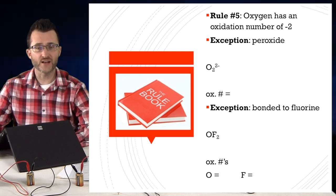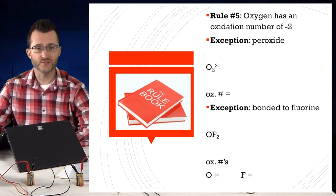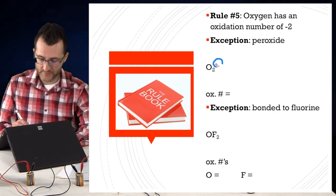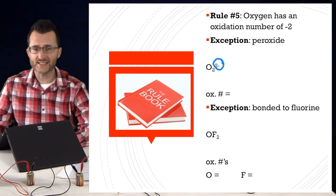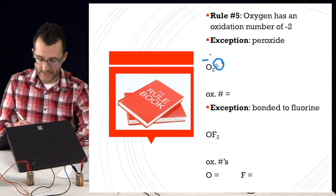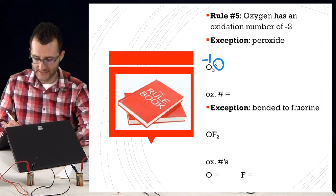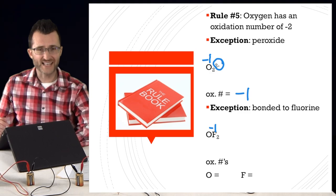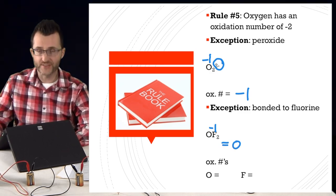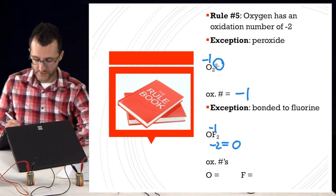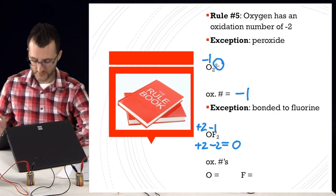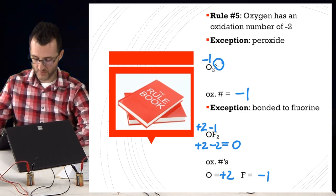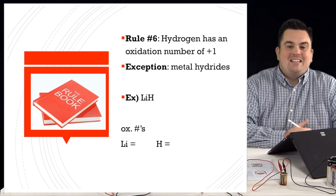Rule 5: oxygen has an oxidation number of negative two, with two exceptions. First exception: peroxide (O2 2-minus). It's a polyatomic ion that must add up to negative two, with two oxygens, so each oxygen is negative one. Second exception: when oxygen is bonded to fluorine. Fluorine is more electronegative and gets its negative one charge. Since they can't both be negative and everything must add up to zero — negative one times two equals negative two — oxygen in this case is plus two, and fluorine is minus one.